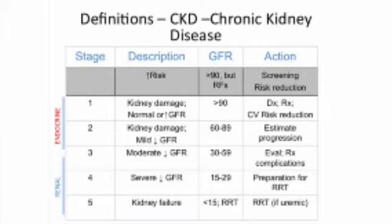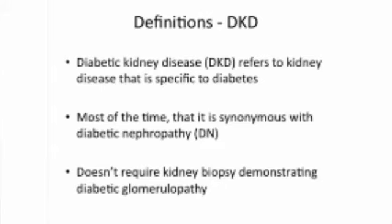The last definition I want to give is DKD, which stands for diabetic kidney disease — in other words, having chronic kidney disease caused by diabetes. This term is relatively new, even younger than CKD, only around for a couple of years. The term you might have heard before when searching the internet is DN, standing for diabetic nephropathy, which essentially refers to the same thing. These two terms are equivalent with minor exceptions.